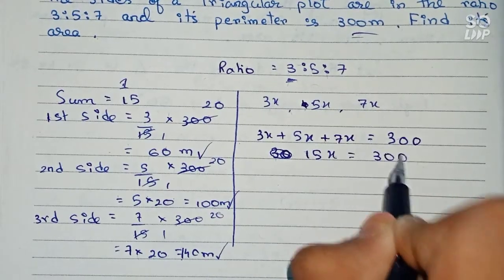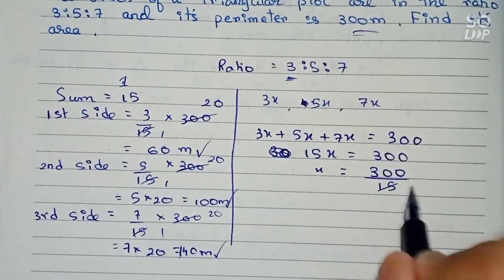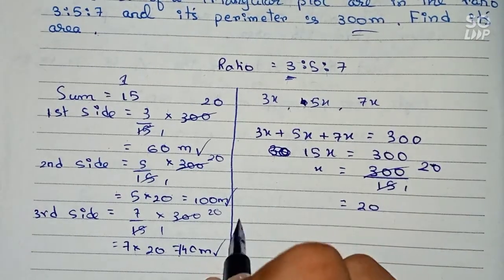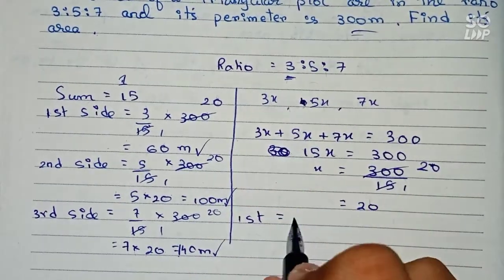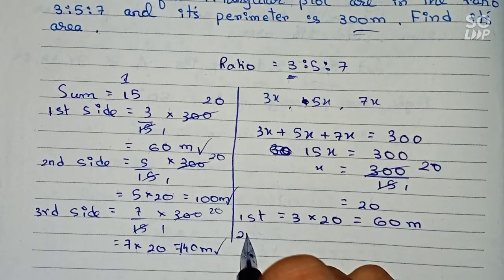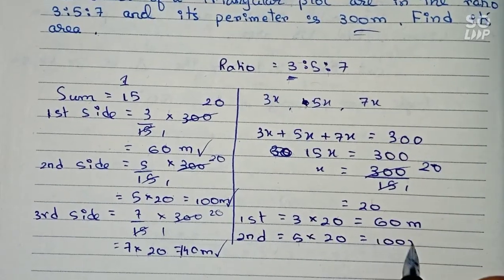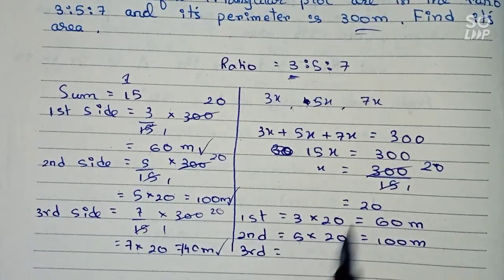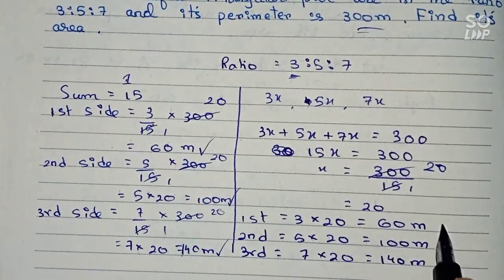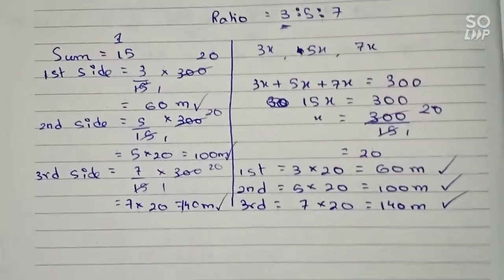So 15x equals 300, which gives x equals 300/15, and cancelling we get x equals 20. Therefore, the first side equals 3x = 3 into 20 = 60 meters, the second side equals 5x = 5 into 20 = 100 meters, and the third side equals 7x = 7 into 20 = 140 meters. Both processes give the same answer.